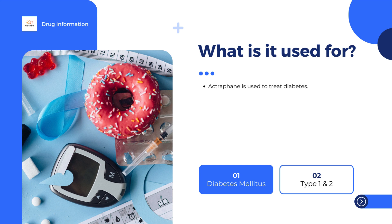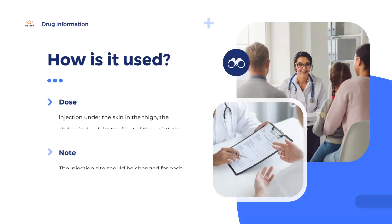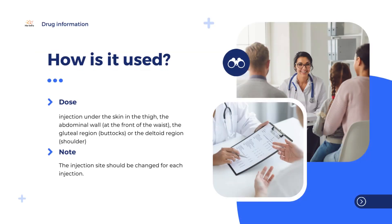The patient's blood glucose (sugar) should be tested regularly to find the lowest effective dose. The usual dose is between 0.3 and 1.0 international units (IU) per kilogram body weight per day. Actrophane is given 30 minutes before a meal, usually once or twice a day, when a rapid initial effect together with a more long-lasting effect is needed.